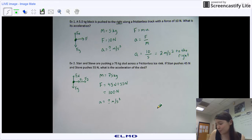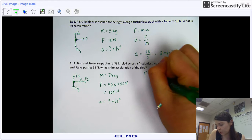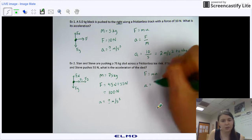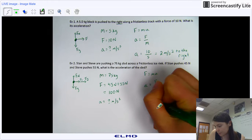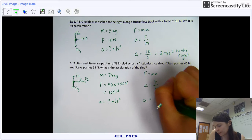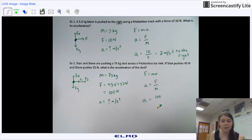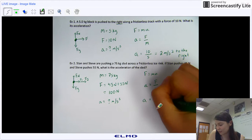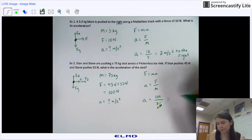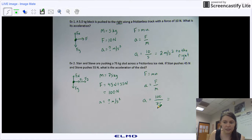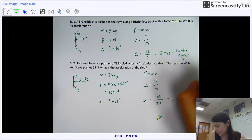So once again, same exact setup. Write your formula. Rearrange for acceleration. We're just dividing mass over, and then plug in your numbers. So in this case, we're going to have a force of 100 newtons combined from Stan and Steve, and we're going to divide that by a mass of 75. That's going to give us an acceleration of 1.33 meters per second squared.